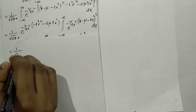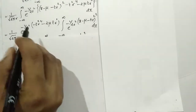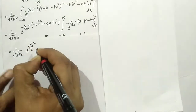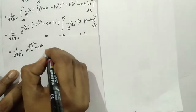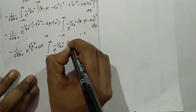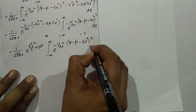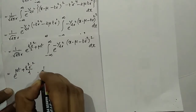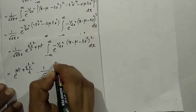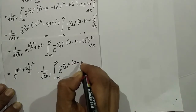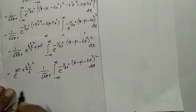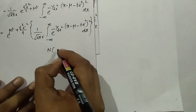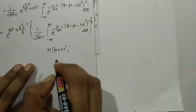This equals 1 by root(2 pi) sigma times e raised to minus 1 by 2 sigma squared multiplied by t squared sigma squared by 2, times the integral from minus infinity to infinity of e raised to minus 1 by 2 sigma squared times (x minus mu minus t sigma squared) whole squared dx. That integral is the PDF of a normal distribution with mean mu plus t sigma squared and variance sigma squared, which integrates to 1.